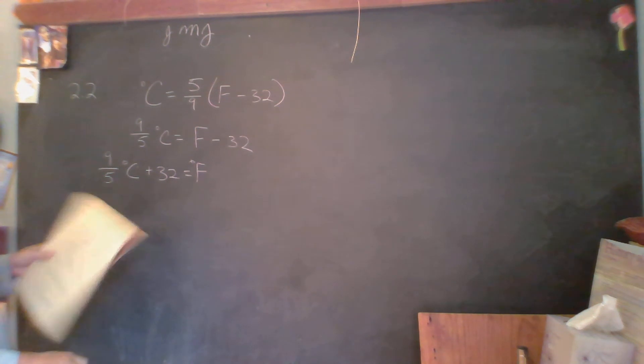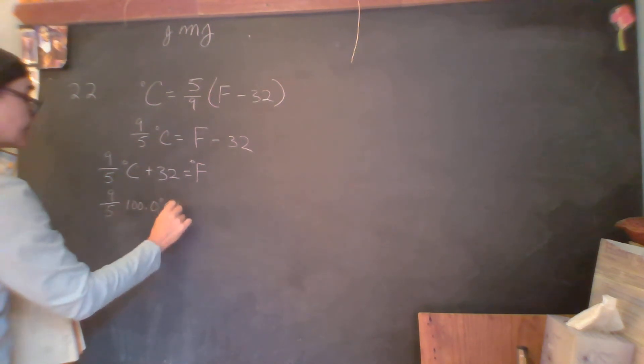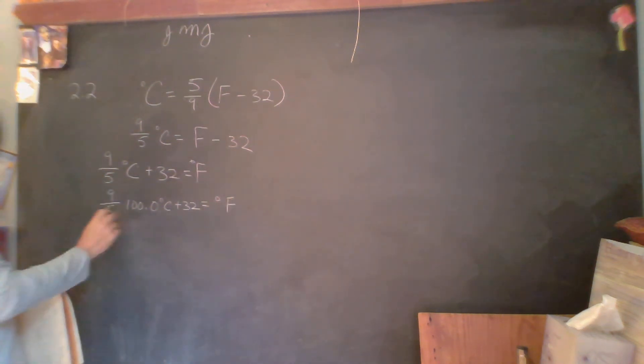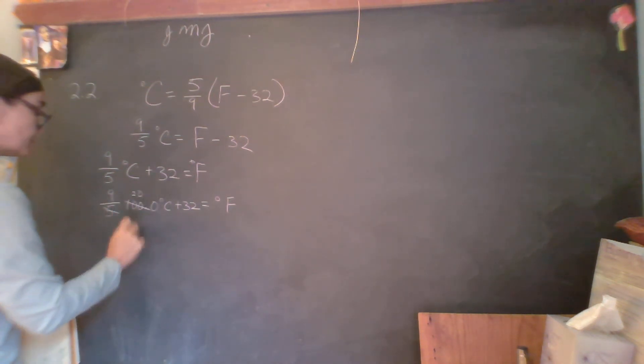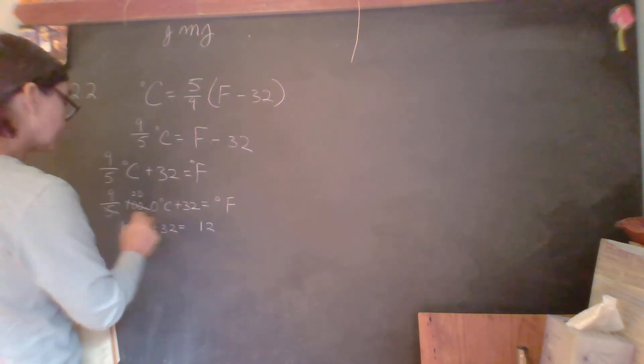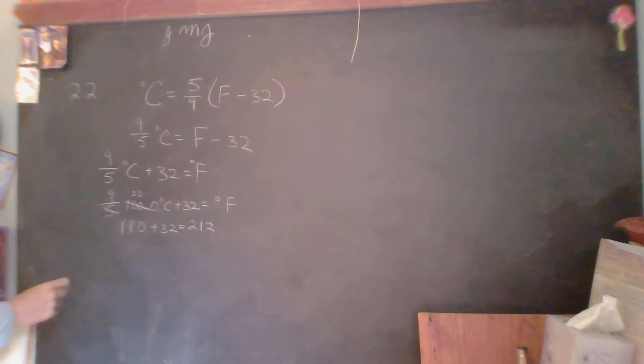Let's plug in our numbers. 9 fifths of 100.0 degrees Celsius plus 32 equals degrees Fahrenheit. 5 goes into 100—I'm going to ignore significant digits for the moment and just use 100. That's 20 times 9, which is 180 plus 32, giving me 212 degrees Fahrenheit.